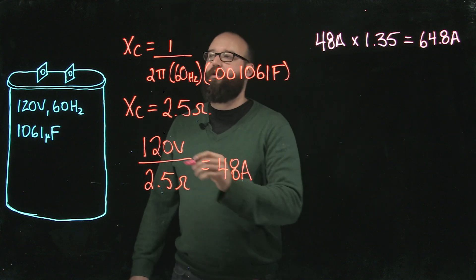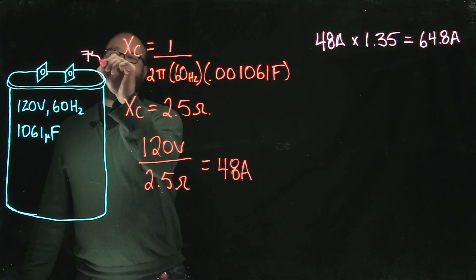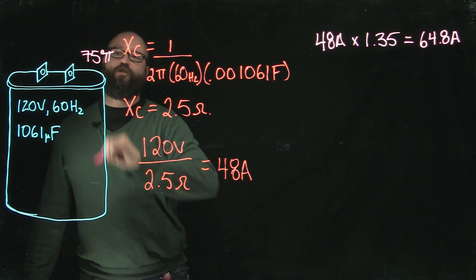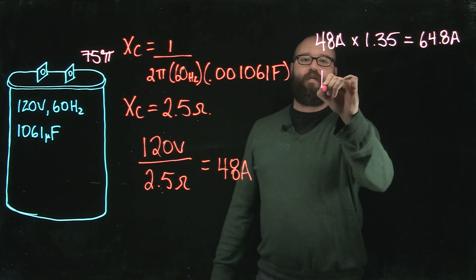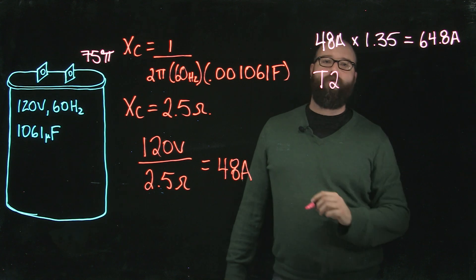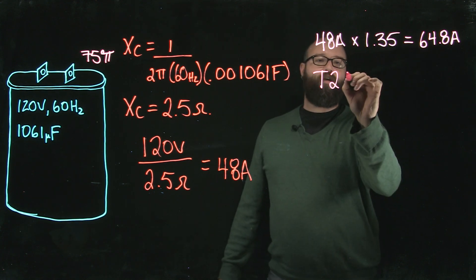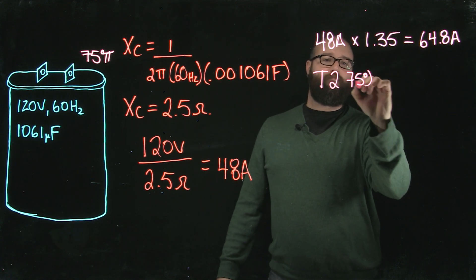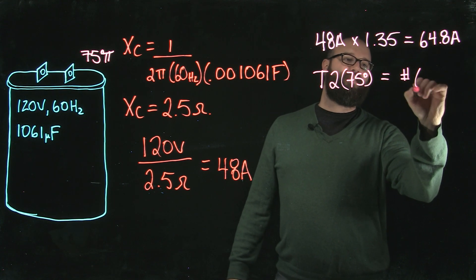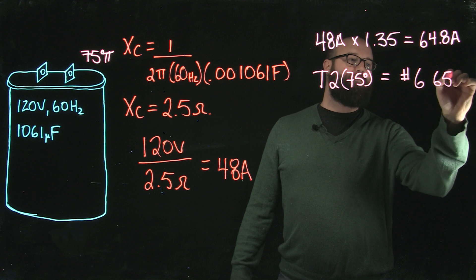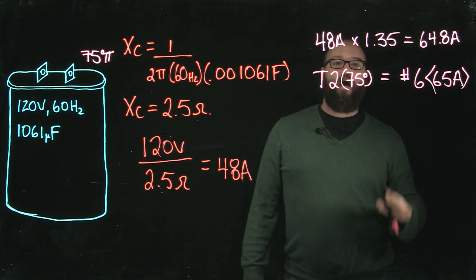So let's say we're working with a 75 degree termination on our capacitor and our overcurrent device. When I go to table 2 in our code, in our 75 degree column, we're going to end up choosing a number 6 which has an ampacity of 65 amps.